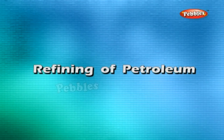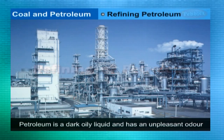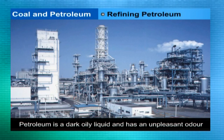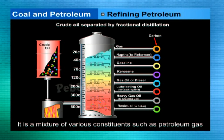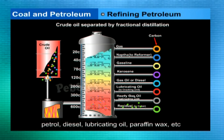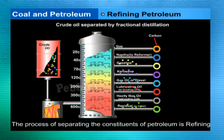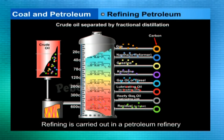Refining of Petroleum: Petroleum is a dark, oily liquid with an unpleasant odor. It is a mixture of various constituents such as petroleum gas, petrol, diesel, lubricating oil, paraffin wax, etc. The process of separating the various constituents or fractions of petroleum is known as refining. It is carried out in a petroleum refinery.